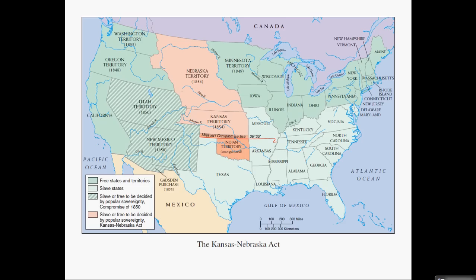The Kansas-Nebraska Act is also huge. When Kansas and Nebraska territories gained enough citizens to apply for statehood, there was significant controversy. In Chicago, there was a proposition heavily supported by Senator Stephen Douglas — the same guy from the Lincoln-Douglas debates — who basically wanted a transcontinental railroad with a terminus, meaning a station, from Chicago to the San Francisco Bay Area. In order to do that, it had to pass through territory that, up until the 1850s, was Native American territory.